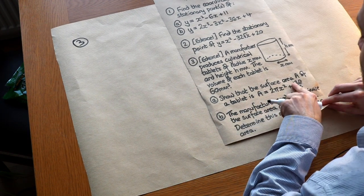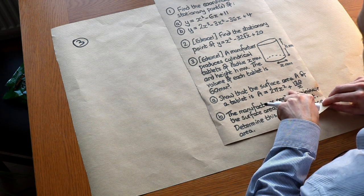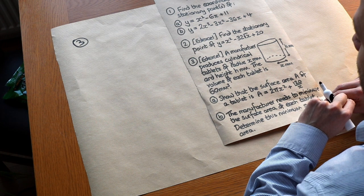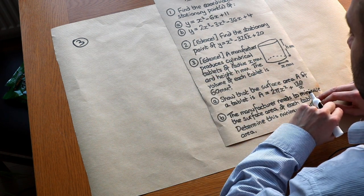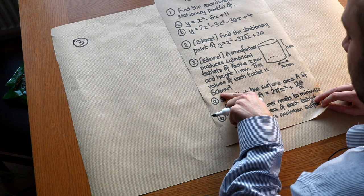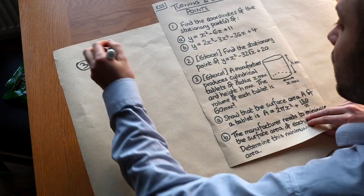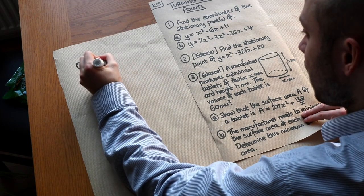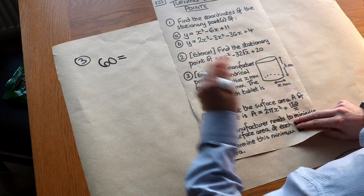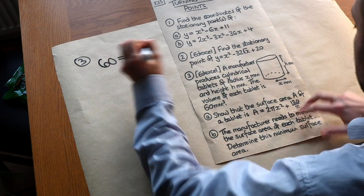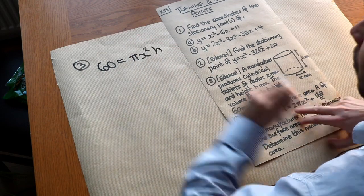Firstly, show that the surface area A of a tablet is 2πx² + 120/x. I tend to write out equations based on what's given. We're told the volume is 60, so: 60 = πx²h (volume of a cylinder is π times radius squared times height). There's one equation.